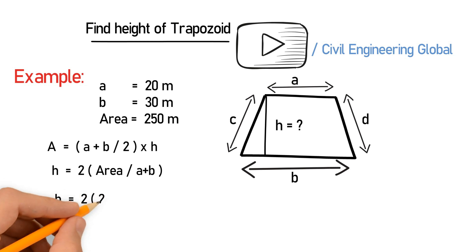h is equal to 2 multiplied by 250 divided by 20 plus 30. So the height is equal to 10 meters. That's it.